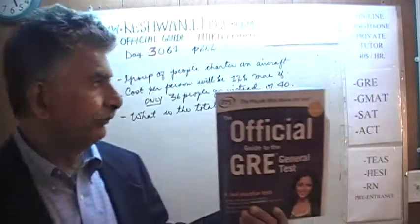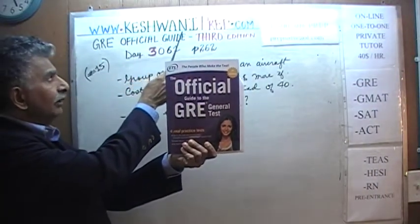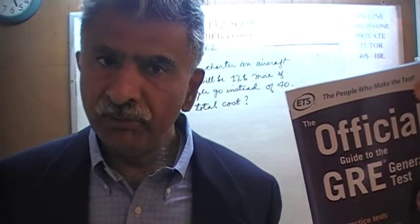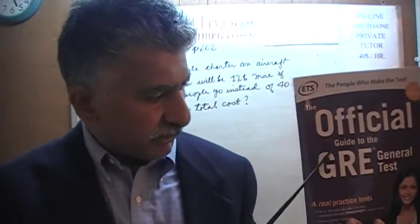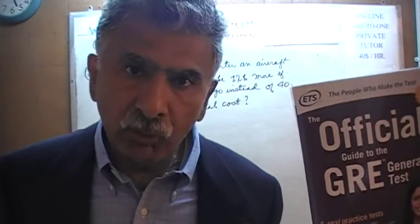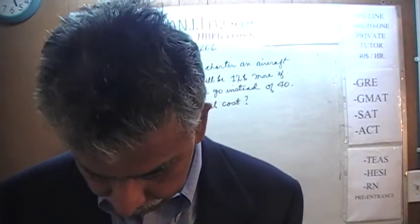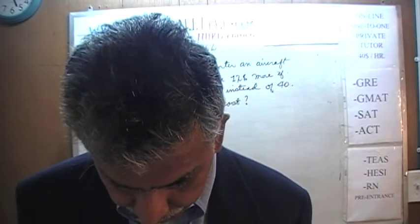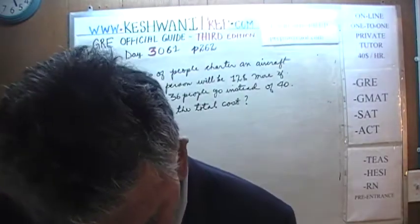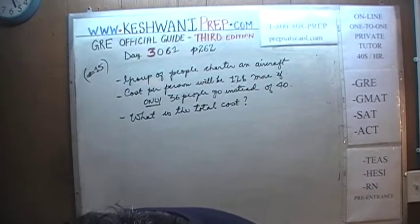Hello, my name is Keshwani — that's K-E-S-H-W-A-N-I. We are here because we want to prepare for the GRE. We have been solving math problems out of the official guide to the GRE, the third edition. If you do not own this book already, purchase one immediately — you're going to need it. Today is our lesson number 61, and we are on page number 262. Please turn to it.